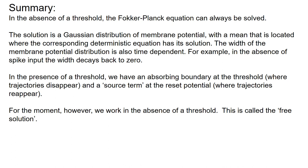With this, I would like to finish. In the absence of a threshold, the Fokker-Planck equation can be solved. The solution is a Gaussian distribution with a mean located where the corresponding deterministic trajectory has its solution. The width of the membrane potential distribution is time-dependent; in the absence of spike input, it would decay back to zero. In the presence of a threshold, it becomes more complicated because we have an absorbing boundary and cannot use this free Gaussian distribution. For now, we have worked without a threshold and no boundary condition — that is why it is called the free solution.